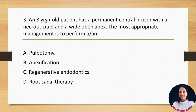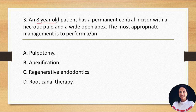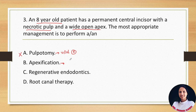An 8-year-old patient has a permanent central incisor with a necrotic pulp and wide open apex. The most appropriate treatment is: A. Pulpotomy, B. Apexification, C. Regenerative endodontics, D. Root canal therapy. Pulpotomy is done in case of a vital tooth, so it is not applicable here. Apexification is a process of inducing the development of root and apical closure in an immature pulpless tooth with an open apex — so this choice fits best.